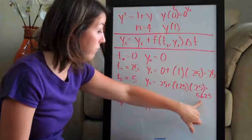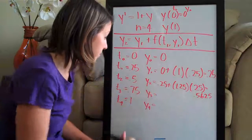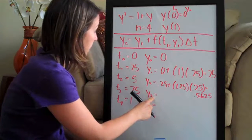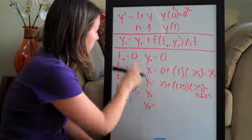So we get 0.5625 is exactly what we were given. Then to find y3, we're going to plug this in.